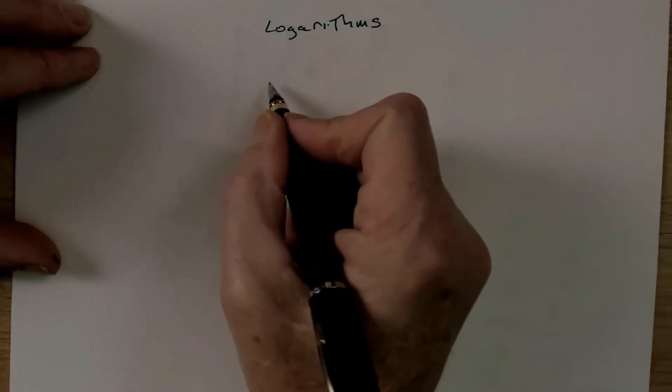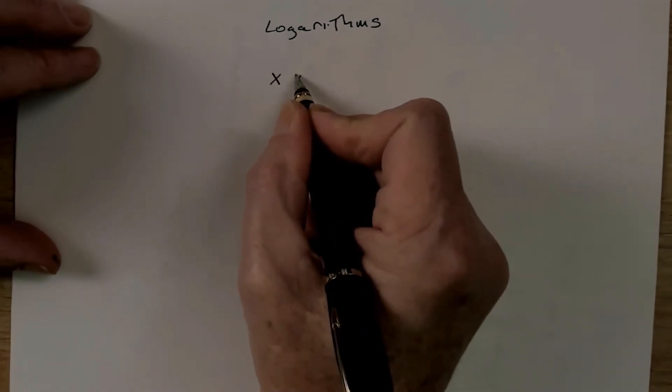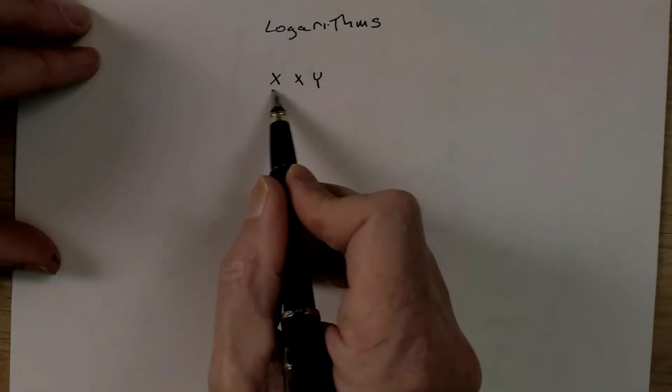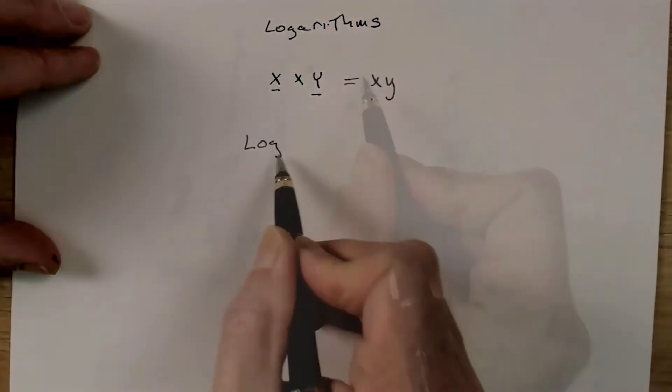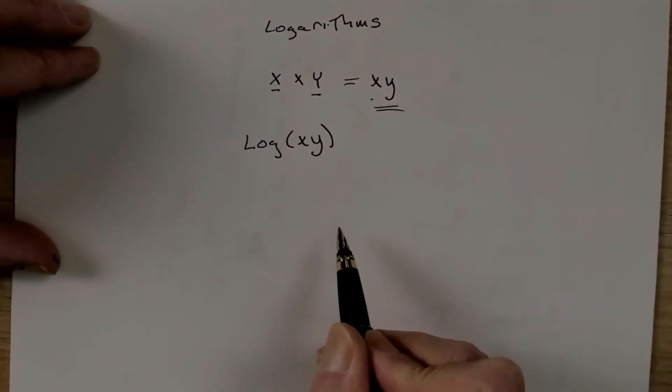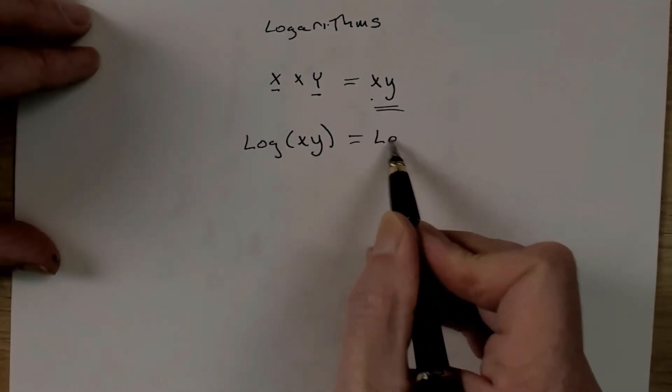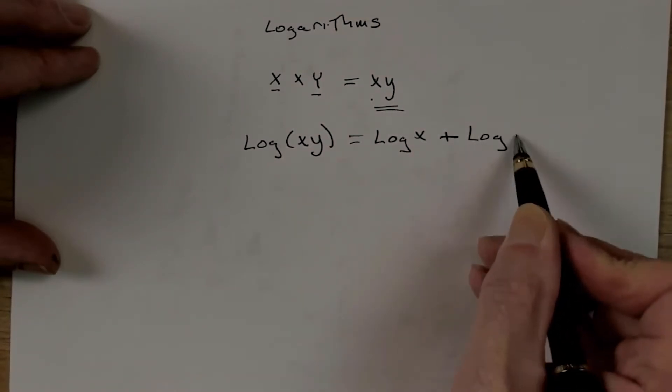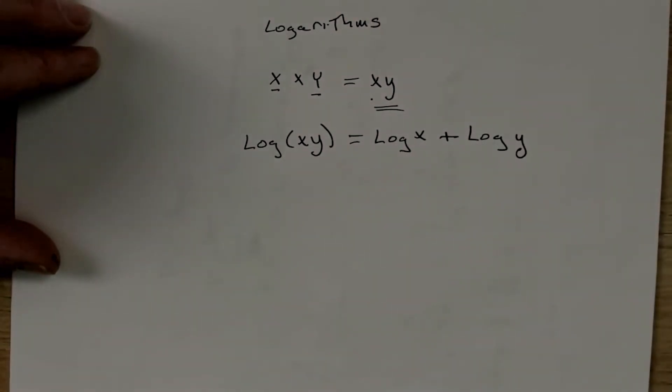So, if you want to take a number and multiply it by another number, log of xy, which is the result here, equals log x plus log y.